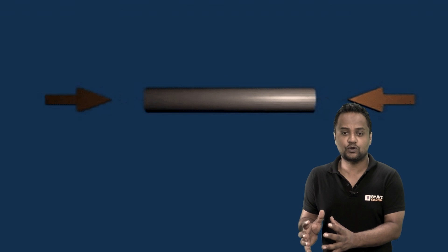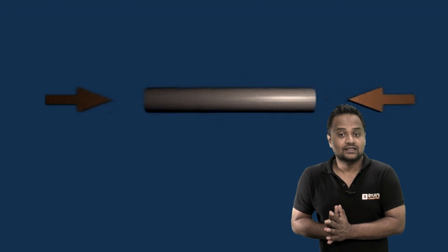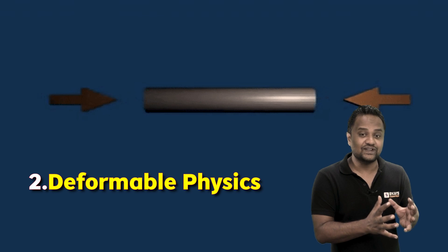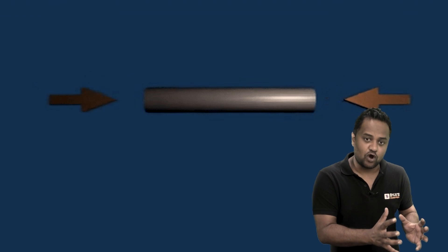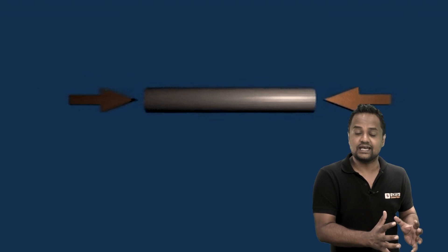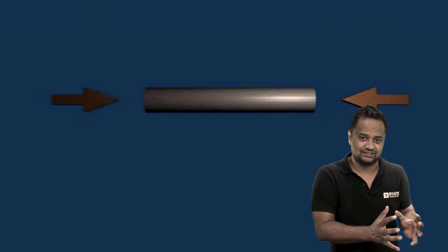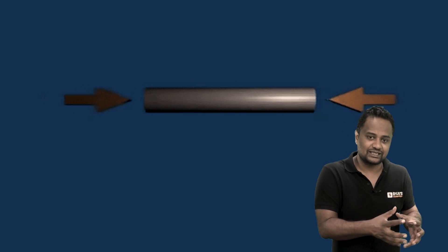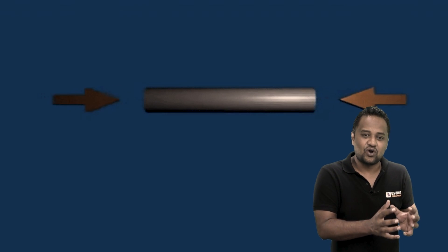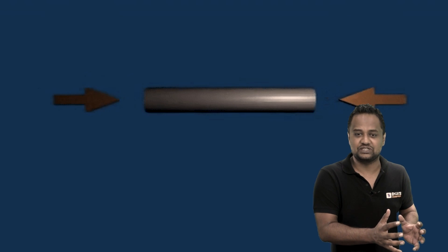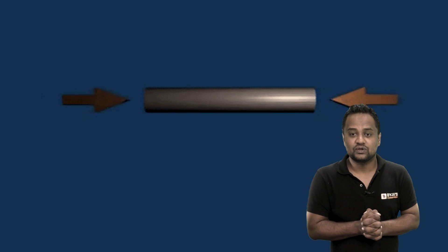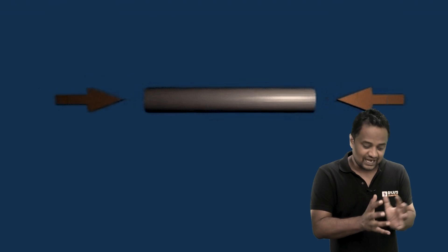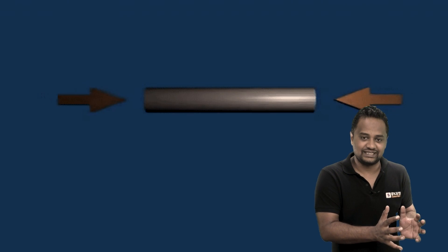Rigid body is a pure assumption. The other type is deformable physics, where we consider a body to be deformed. When we apply forces, the length may change — it may elongate or compress — and the shape may also change. In strength of materials, we deal with these kinds of deformable bodies.